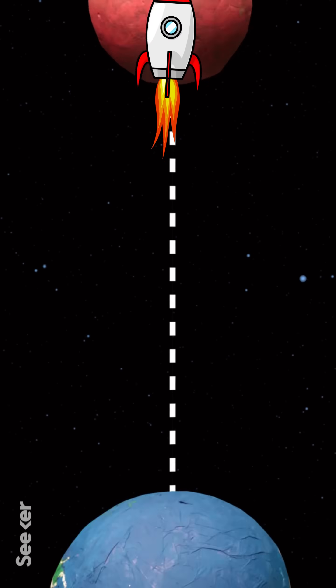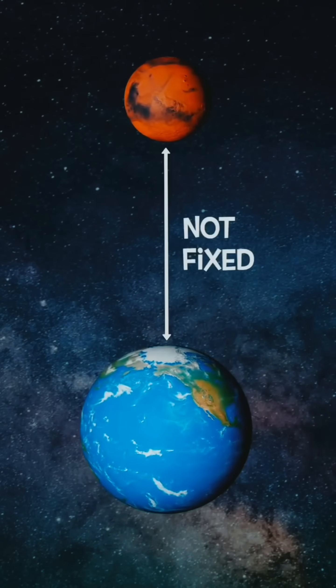Why does it take seven months to get to Mars? Well, first of all, the distance between Earth and Mars is not fixed.